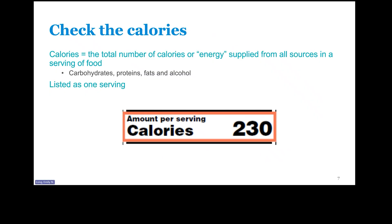Step two is to check the total calories. When we talk about calories, we're referring to the total number of calories or energy supplied from all sources, including carbs, proteins, fats, and alcohols in one serving of the food. You'll find out how many calories are in a single serving, but remember this number is for one serving, so you need to adjust the number of calories for smaller or larger portions.